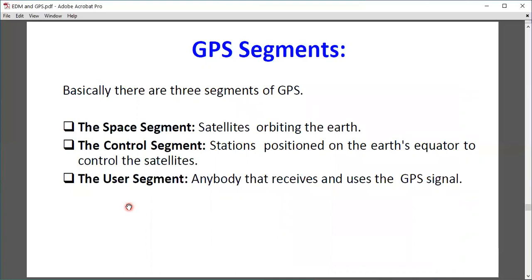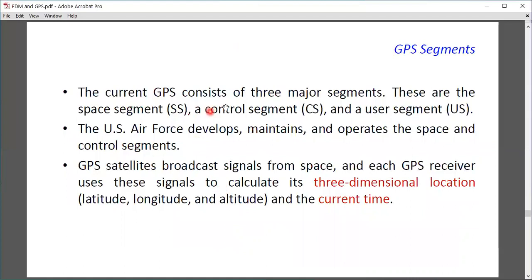The GPS segments are basically three segments: the space segment, the control segment, and the user segment. In the space segment, satellites orbit the Earth in space. The control segment consists of stations positioned on Earth that control the satellites. The user segment is anybody that receives and uses GPS signals, like your mobile device. Your signal is connected to the space segment and controlled by the control segment.